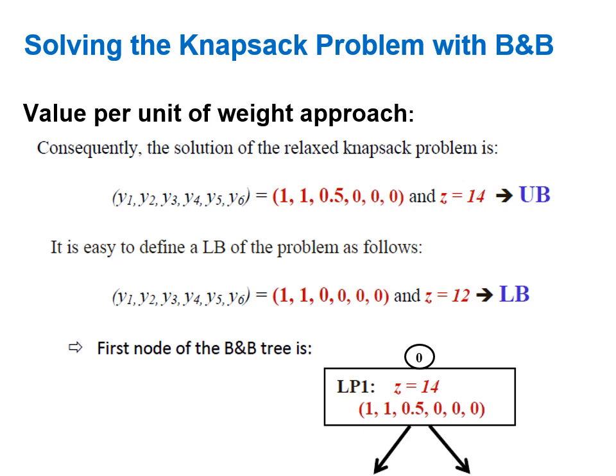We use this algorithm at the root node, node zero, to solve the relaxed problem and find y1 equals one, y2 equals one, y3 equals 0.5, all others zero, with objective function value 14. Since this is a maximization problem, the relaxed problem's optimal solution provides an upper bound. We can also make an important observation: since this is a maximization problem, we start with the lower bound at minus infinity.